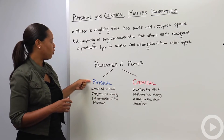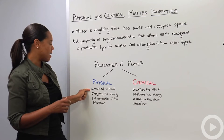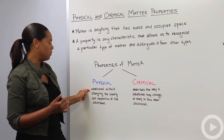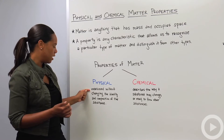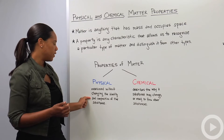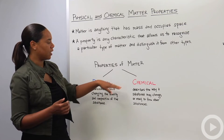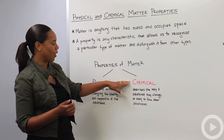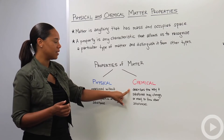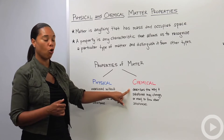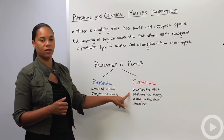A physical property of matter is defined as being measured without changing the identity and composition of the substance. Versus a chemical property, which describes the way a substance may change or react to form other substances.